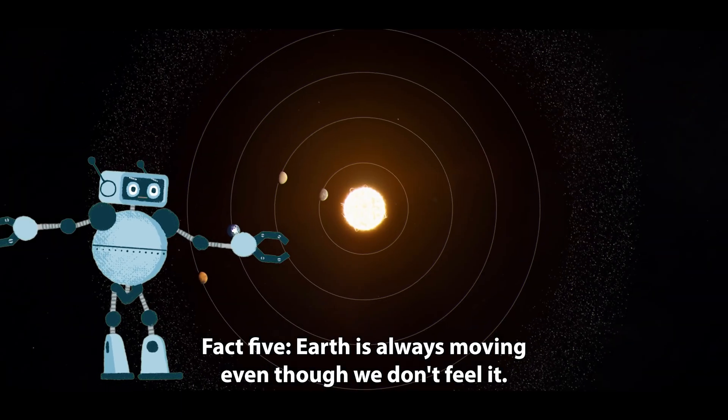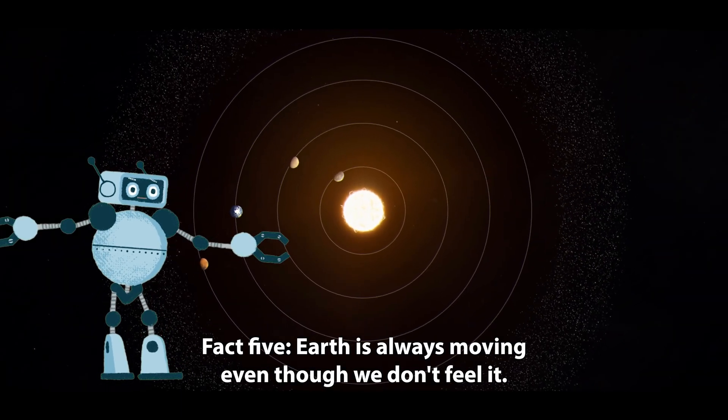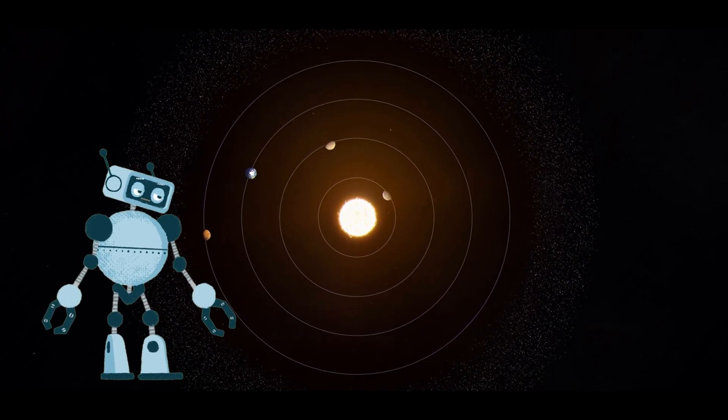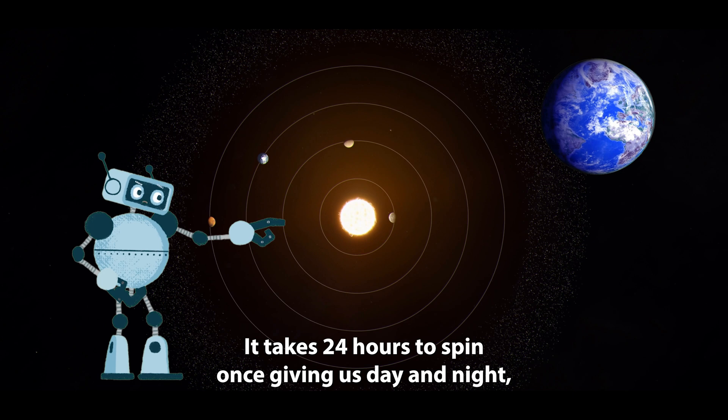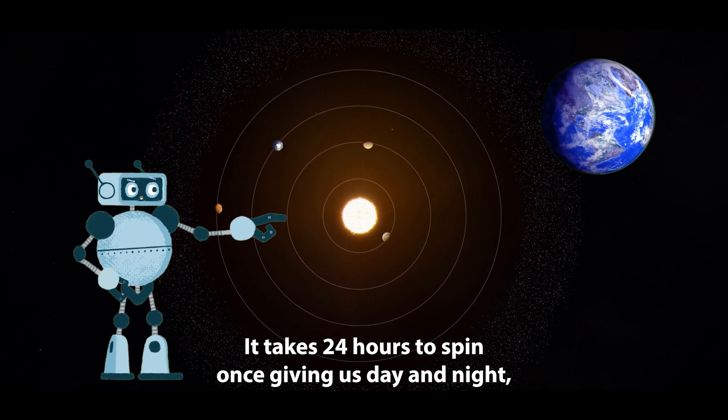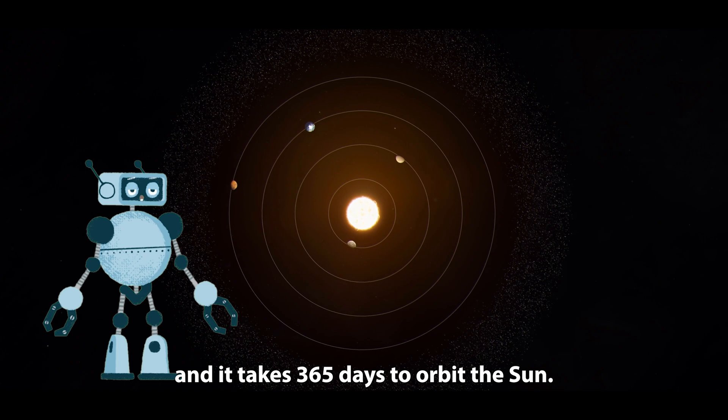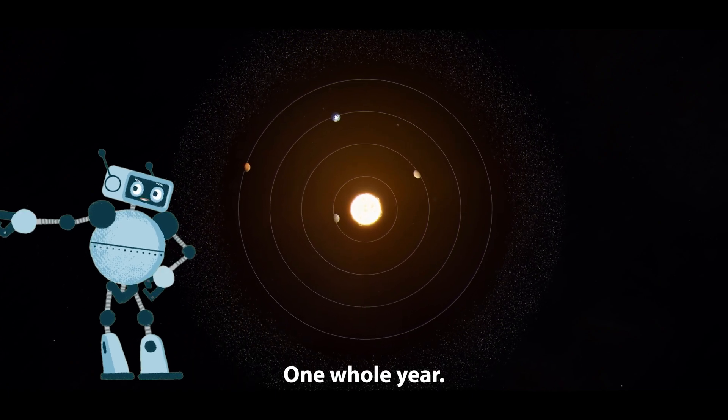Fact five: Earth is always moving. Even though we don't feel it, Earth is always spinning and moving around the sun. It takes 24 hours to spin once, giving us day and night, and it takes 365 days to orbit the sun—one whole year.